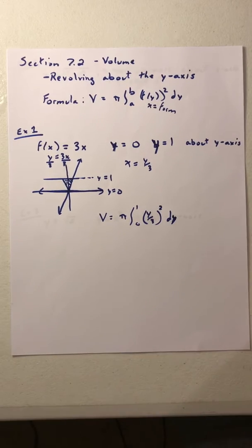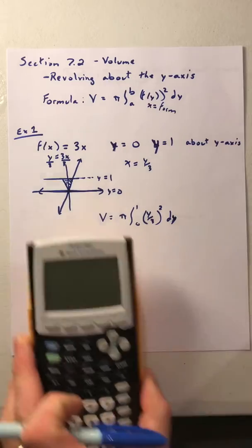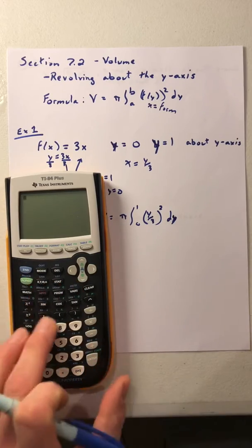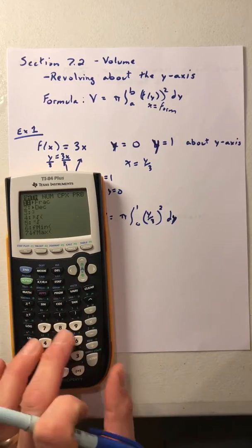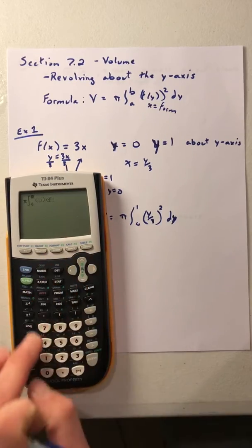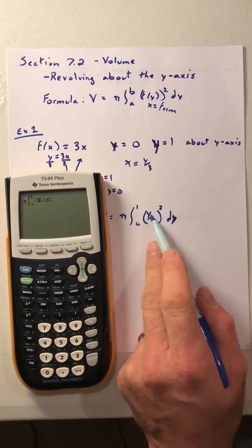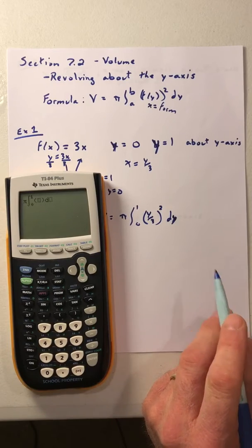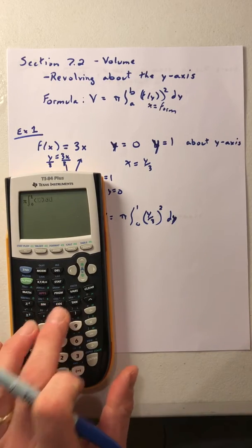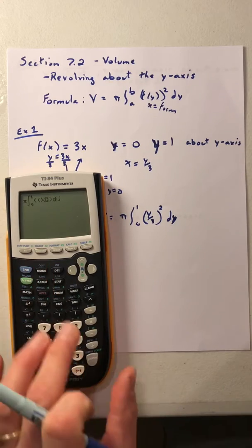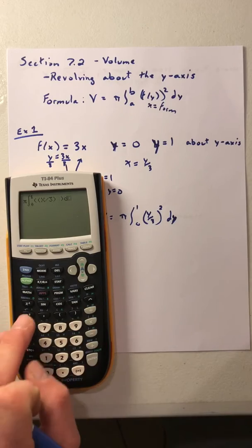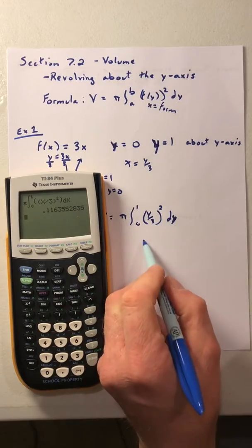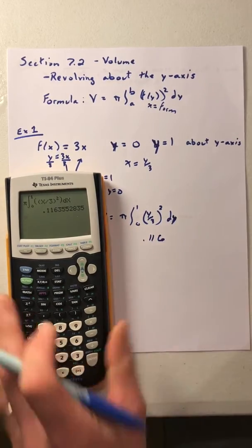We can integrate this by hand or use the calculator. In the calculator, we do pi times the integration from 0 to 1. Remember, these are arbitrary variables, so we can change them to x's within the integration as long as we remember they were y's. So we integrate from 0 to 1 of (x/3) squared dx. Entering that, I end up with 0.116 as my volume.